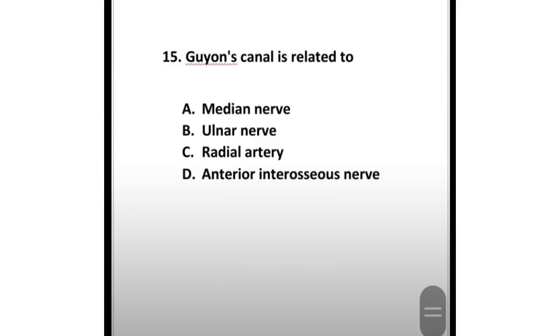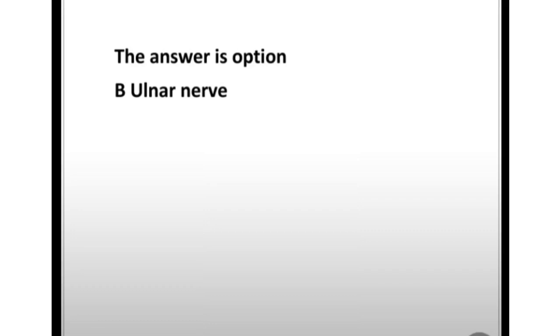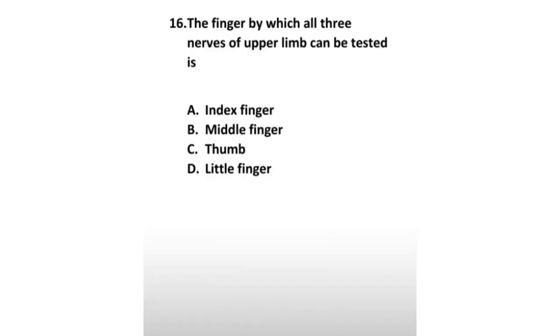Guyon's canal is related to which structure — median nerve, ulnar nerve, radial artery, or anterior interosseous nerve? The answer is option B: ulnar nerve. The finger by which all three nerves of the upper limb can be tested is the index finger, middle finger, or thumb?